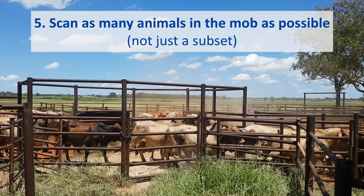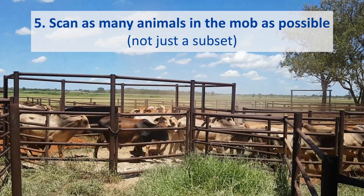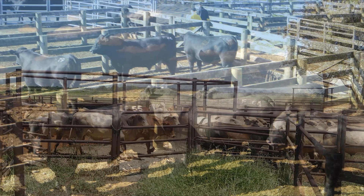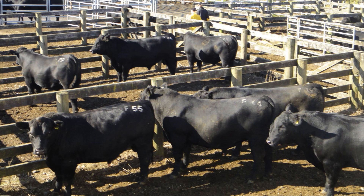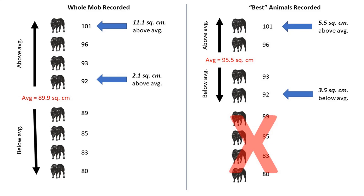It is important to scan as many animals within each management group or mob as possible. Recording only a subset of your animals — for example, only submitting the scanning performance on your sale bulls rather than the entire bull drop — can lead to data biases and may lead to the calculation of EBVs that do not reflect the true genetic merit of your animals. In most situations, recording information on only the best animals is detrimental, as top performing animals will appear worse than they should.